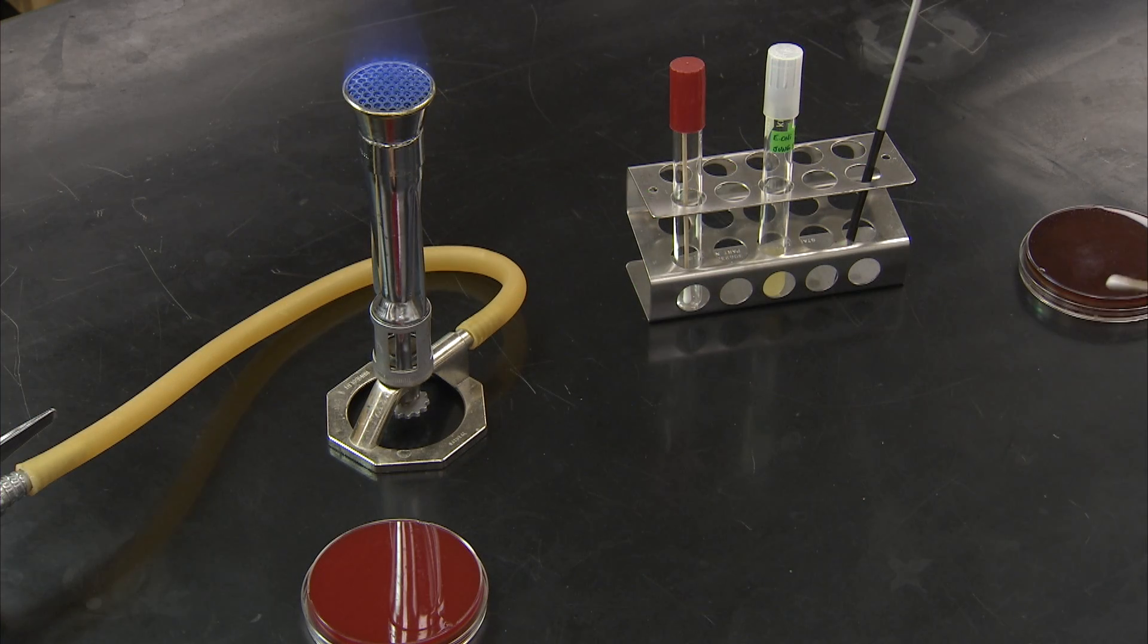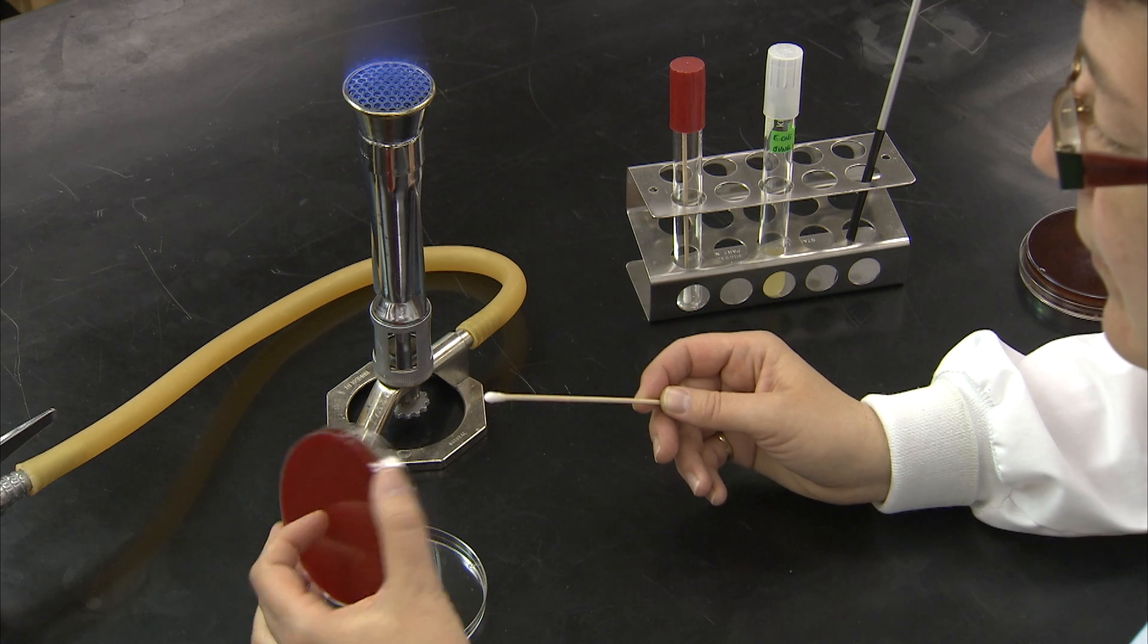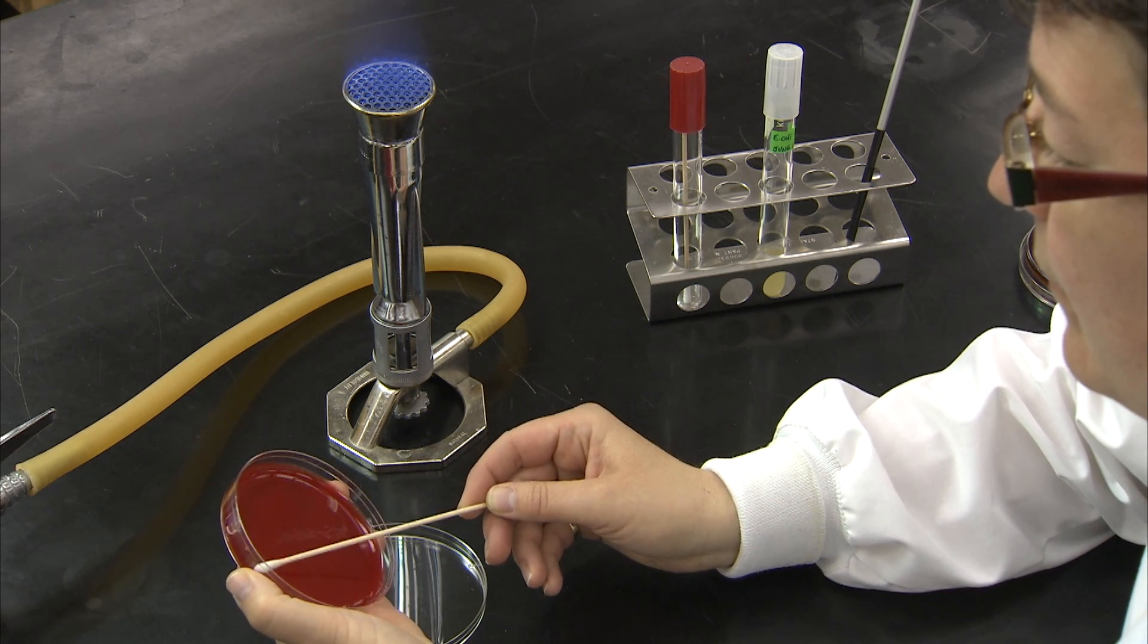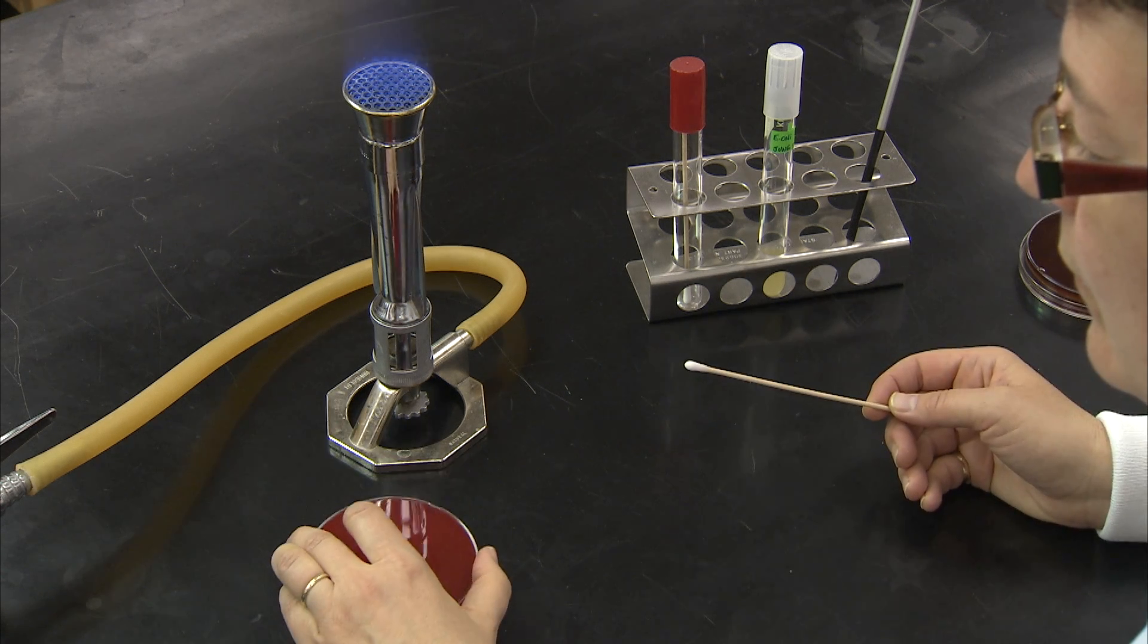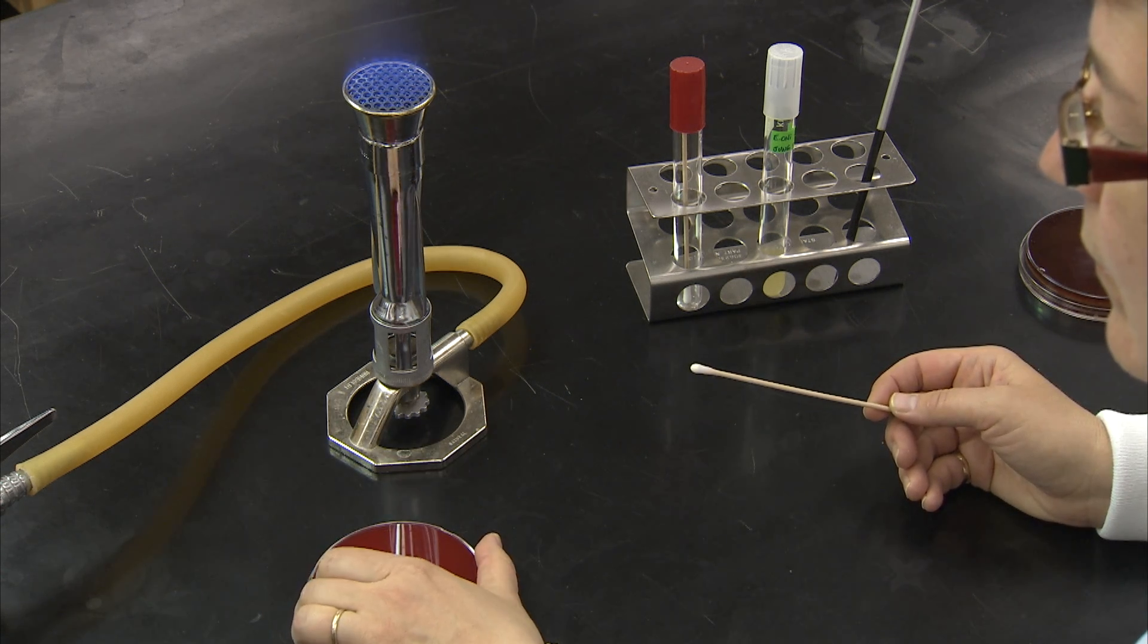When sampling from an area such as the skin for single colonies, the initial streaks for a plate may also be made by sampling with a sterile cotton swab, and then the second and third streaks are done with a loop as before.